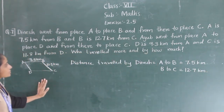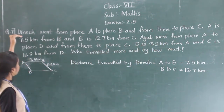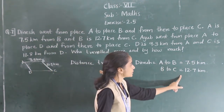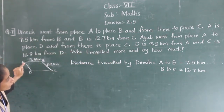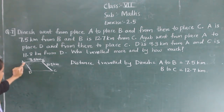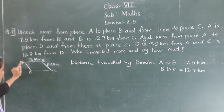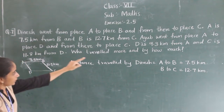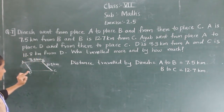Now what is asked? The distance traveled — A to B and B to C. Also, there is another traveler who went from place A to place D, and from there to place C. D is 9.3 km from A.